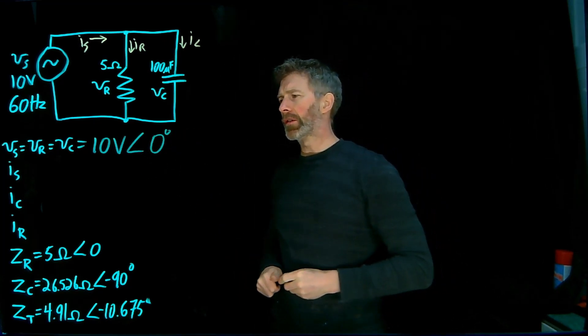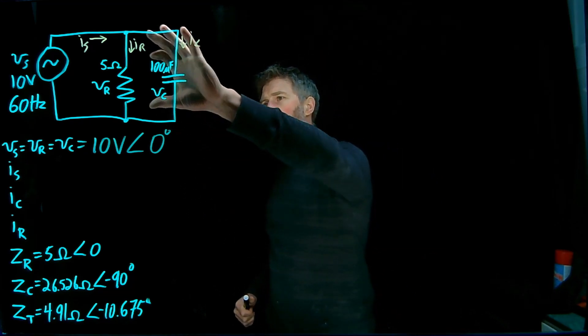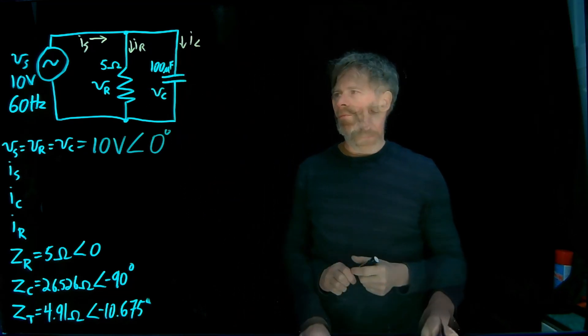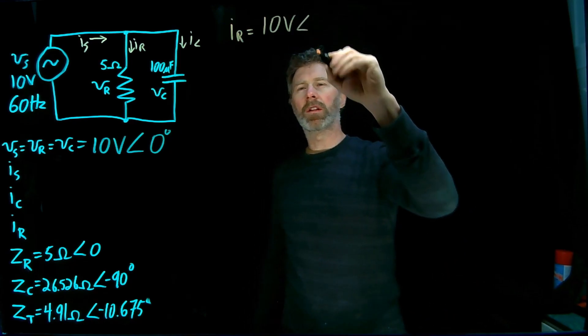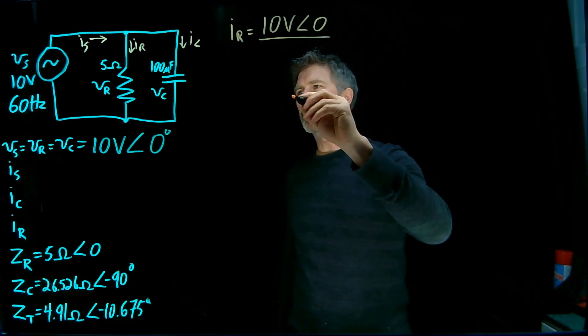Now let's figure out the currents. Let's start with the resistor current. So that's going to be that voltage across that 5 ohm resistor. Again, AC equivalent of Ohm's law. Current is equal to voltage divided by impedance.